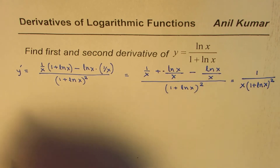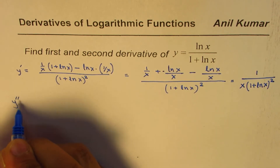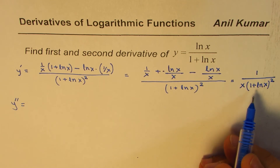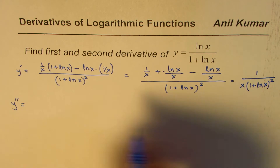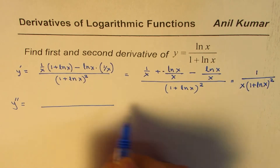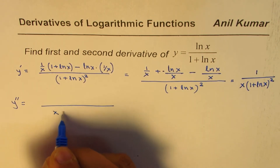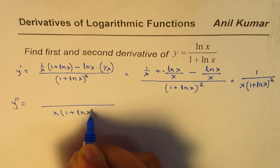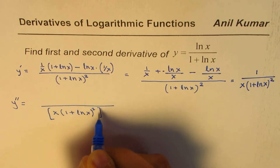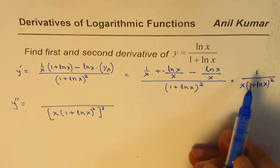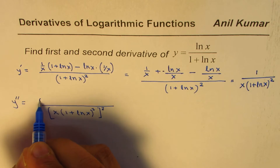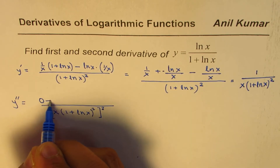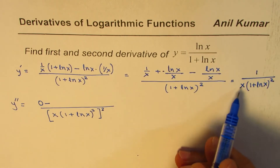Now we can find the second derivative of the same. Again, apply the quotient rule — you could also apply the product rule, but we will apply the quotient rule. The denominator becomes x times (1 + ln(x)) whole squared. Since 1 is in the numerator, its derivative is 0.